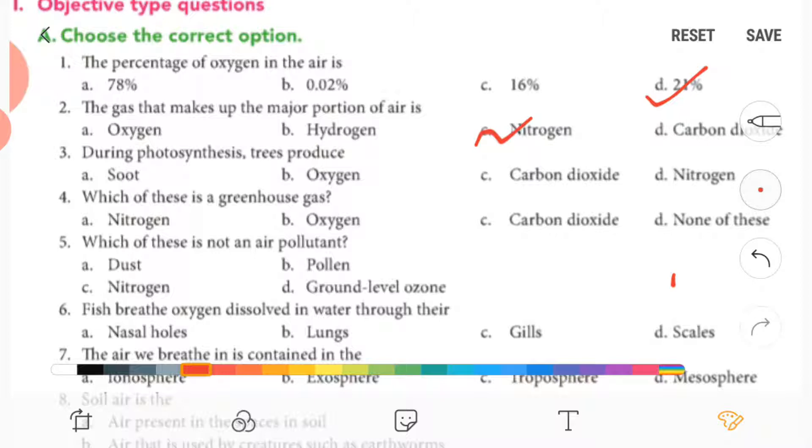Third, during photosynthesis trees produce oxygen. Which of this is a greenhouse gas? So it is carbon dioxide.